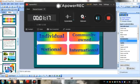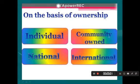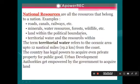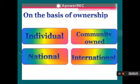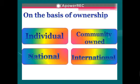Individual resources are the types of resources that are used by an individual only. Our clothes and mobile phones are examples of individual resources. Community-based resources are the types of resources used by the community — for example, government hospitals and government schools.